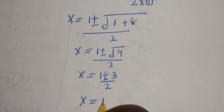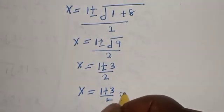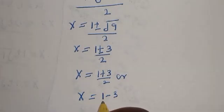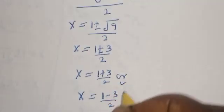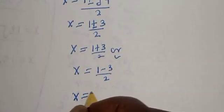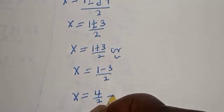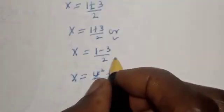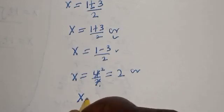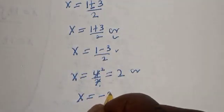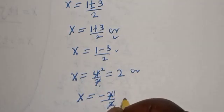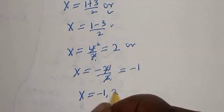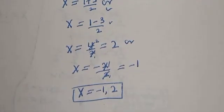Taking the two cases: s equals (1 plus 3) over 2, which is 4 over 2, equal to 2. Or s equals (1 minus 3) over 2, which is minus 2 over 2, equal to minus 1. Therefore s equals 2 or s equals minus 1 — the same answer as the factorization method.